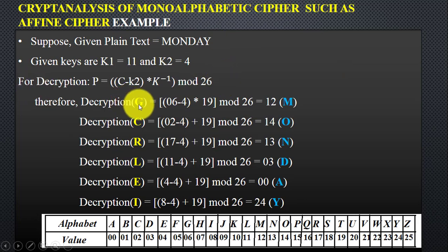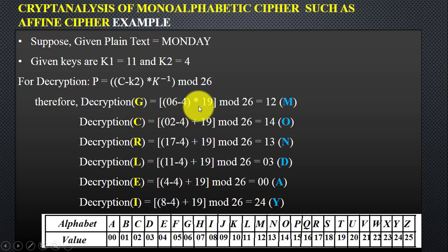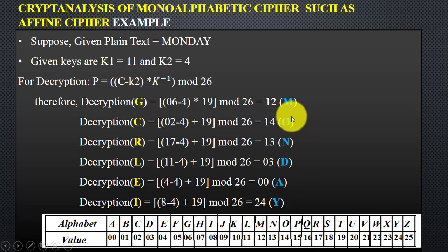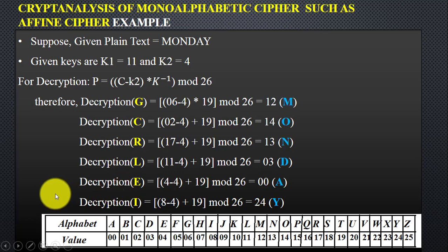For decryption, we use the inverse formula. Starting with ciphertext 'g,' which has value 6, we apply the modulo inverse of k1 and subtract k2, then compute mod 26 to get 12, giving us back 'm.' For ciphertext 'c,' the same process yields 14, which gives us 'o.'